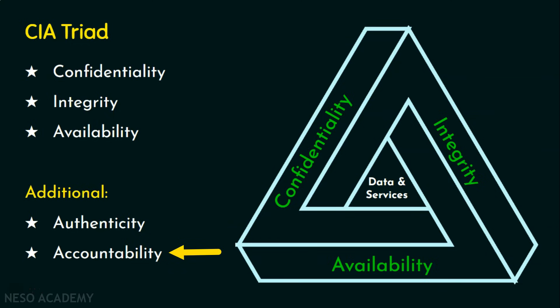Accountability is also an essential part of an information security plan. Every individual who works with an organization or information system should have specific responsibilities for information assurance. Every user who accesses the system has their own roles and responsibilities, and the system should keep records of their activities. This allows forensic analysis later to trace security breaches. The system must ensure every user accesses only their level of privilege and is not misusing those privileges.